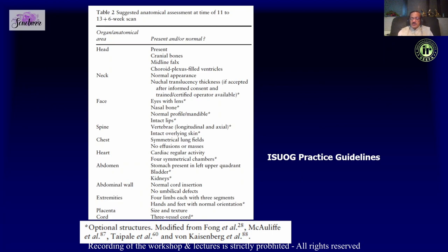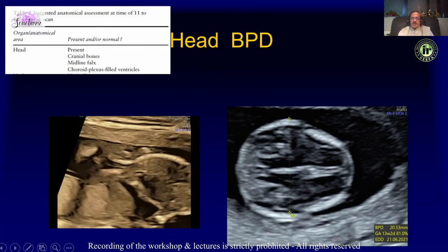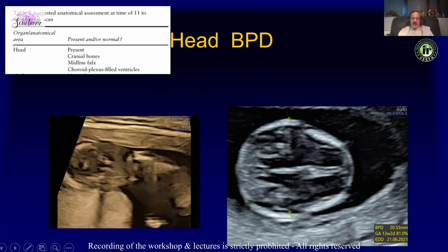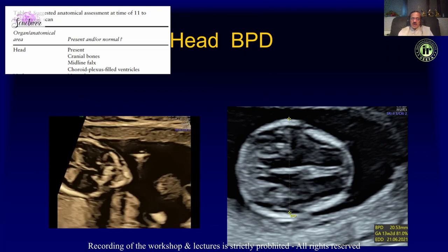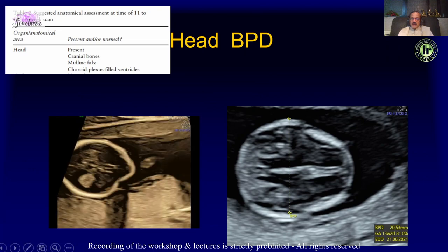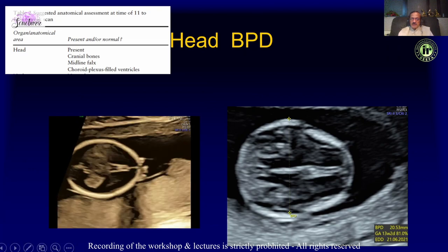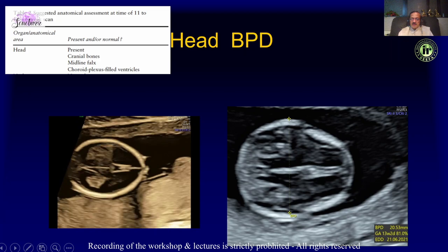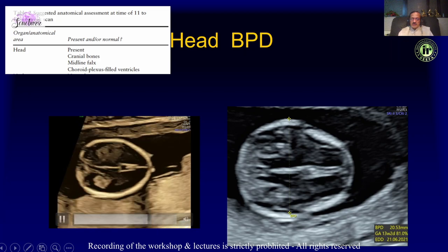We expect to see a lot of structures in the first trimester and can follow the ISUOG guidelines. Starting with the head, the ISUOG guidelines expect us to confirm the head is present, cranial bones are seen, midline falx is seen, and the choroid plexus fills up the ventricles.